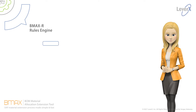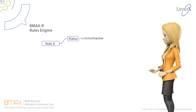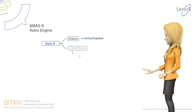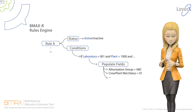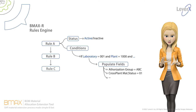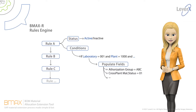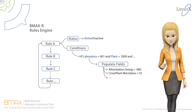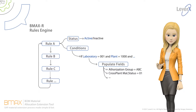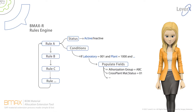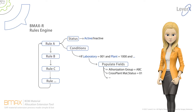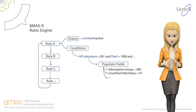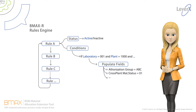BMax R is the rules engine that runs the BMax solution to extend material masters and bill of materials. Business users define concise rules for how data will be populated across material master views. This ensures extension conformance and data quality. Gone will be the need to manually populate data — BMax now automates the whole process. Best of all, the management of rules is simple and straightforward,